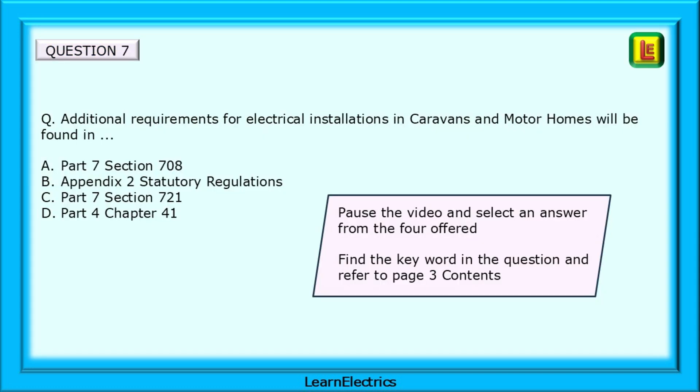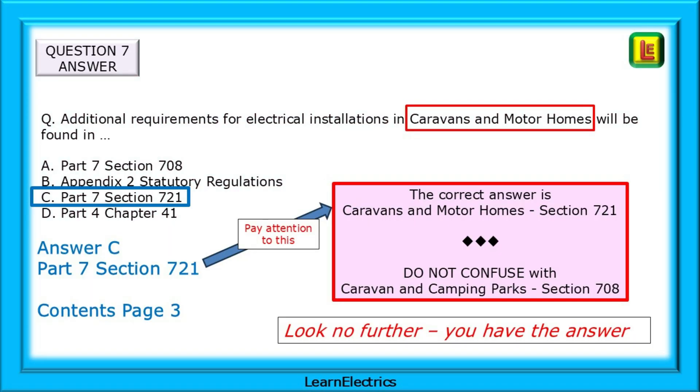Question 7 tells us that additional requirements for electrical installations in caravans and motorhomes will be found in. The answer is part 7, section 721, answer C.